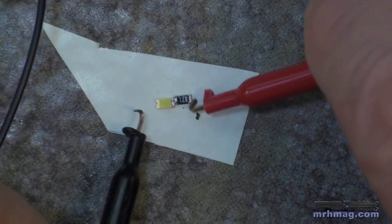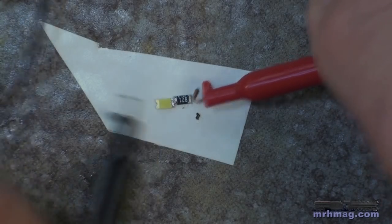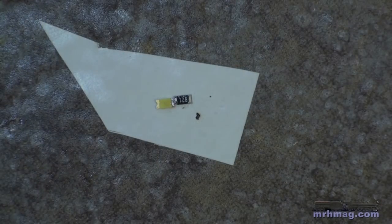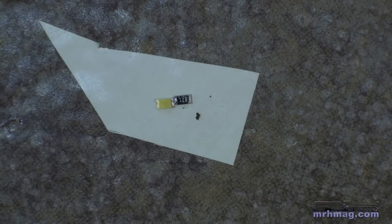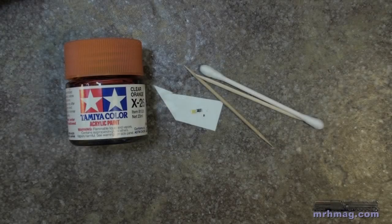This should be the positive side, this should be the negative side. Now you'll notice it's dimmer than it was before. You may not be able to see that on the video. It's dimmer than it was before because you have more resistance in series with it.